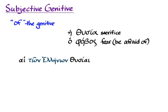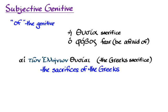You'll get phrases like hai tōn Hellēnōn thusiai. With the subjective genitive, the Greeks are in the genitive — you could be thinking that the Greeks are doing the sacrificing, that that's the relationship of the Greeks to this noun, 'sacrifices.' So we would translate it 'the sacrifices of the Greeks.' 'Of the Greeks' is really all you need to say, without worrying about the fact that the Greeks are doing the sacrificing. The Greeks are the ones doing the sacrificing — that is the implication with the subjective genitive.